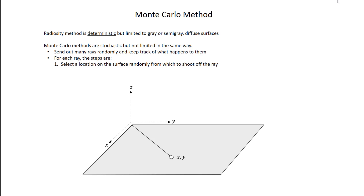Because Monte Carlo is random, every time you run a simulation you'll get a slightly different answer. The idea is to send out many many rays randomly — though not totally randomly. You use probability distributions to make decisions about what happens to these rays, and these distributions are based on the characteristics of the surfaces you're simulating. That's where the technique becomes really flexible.